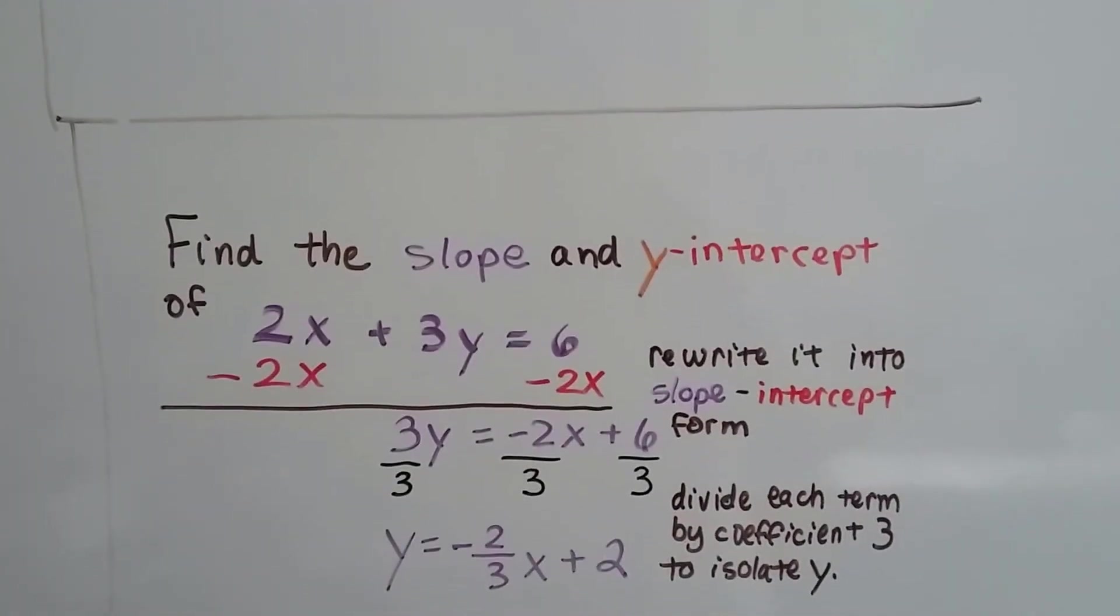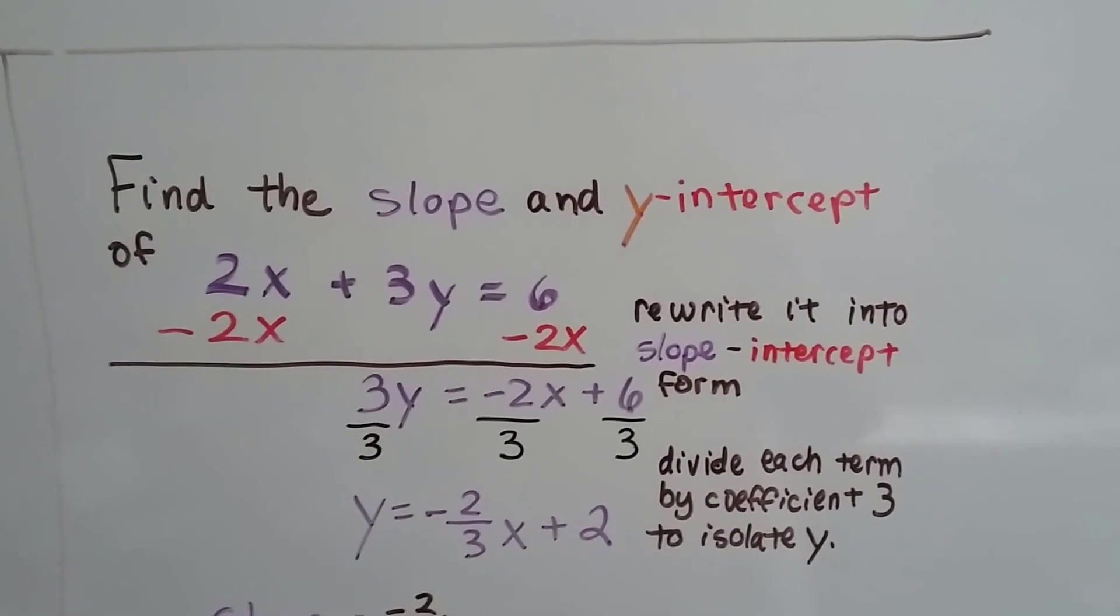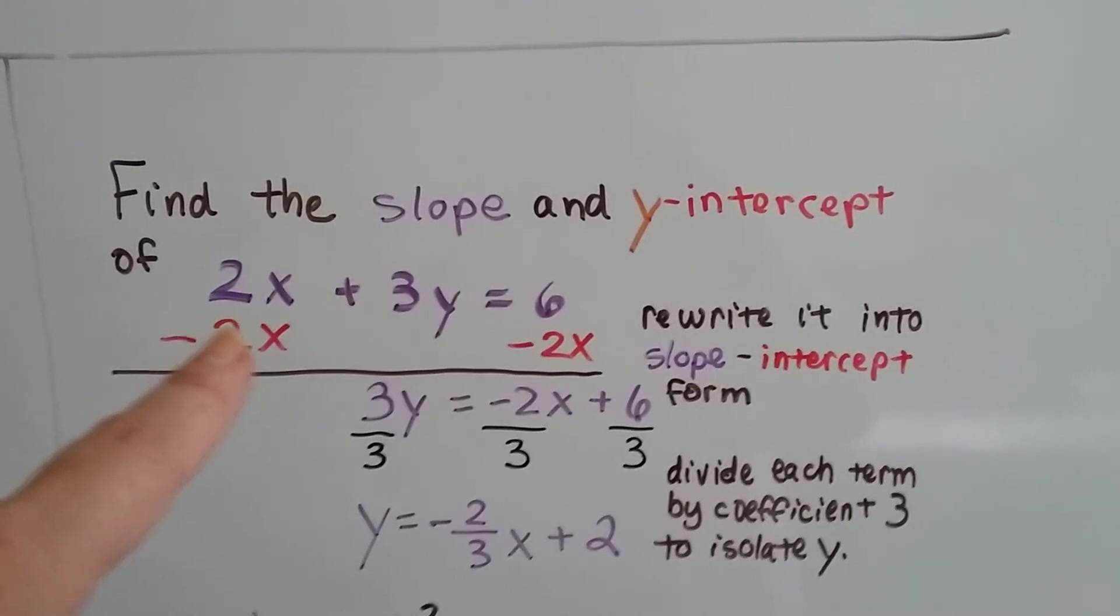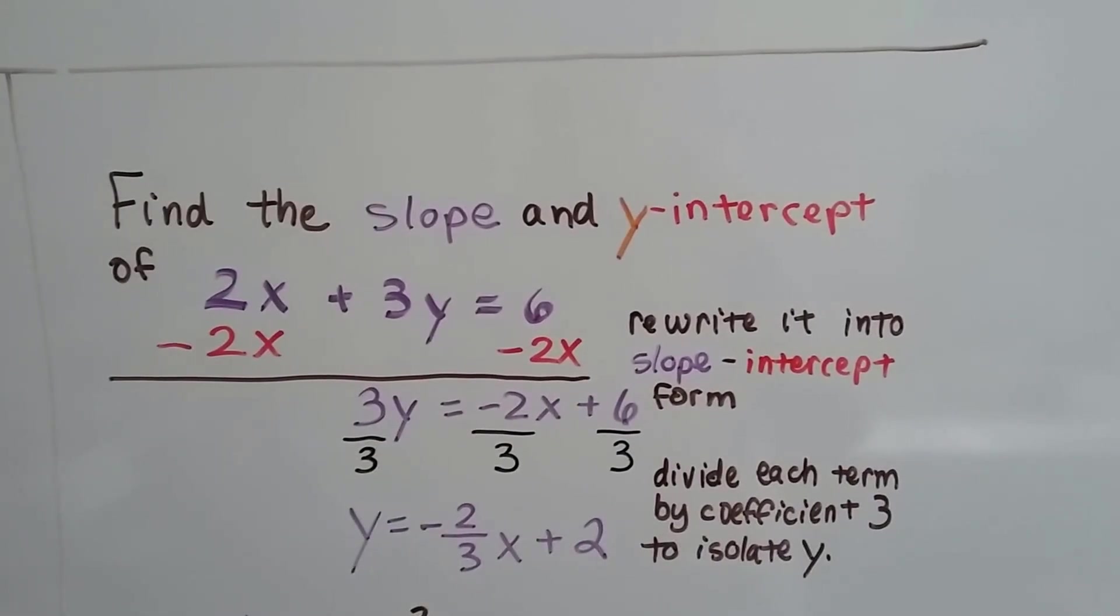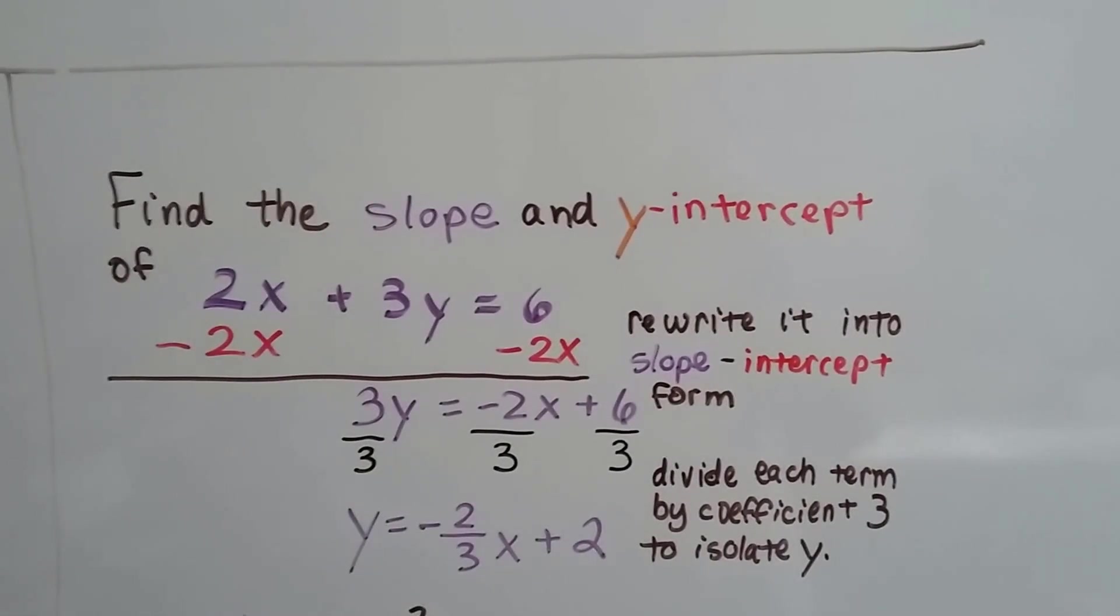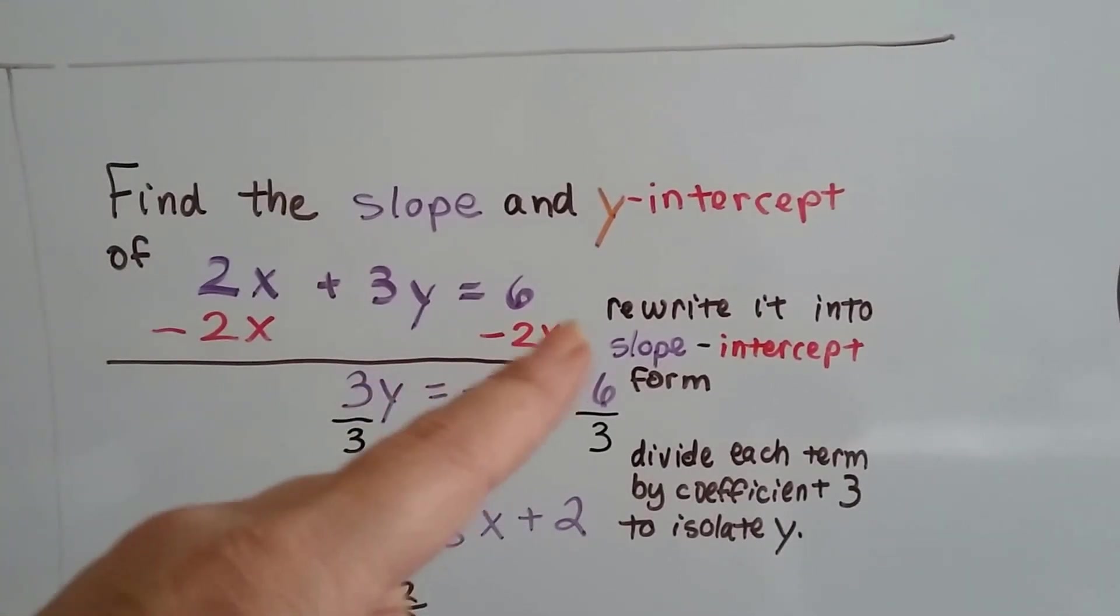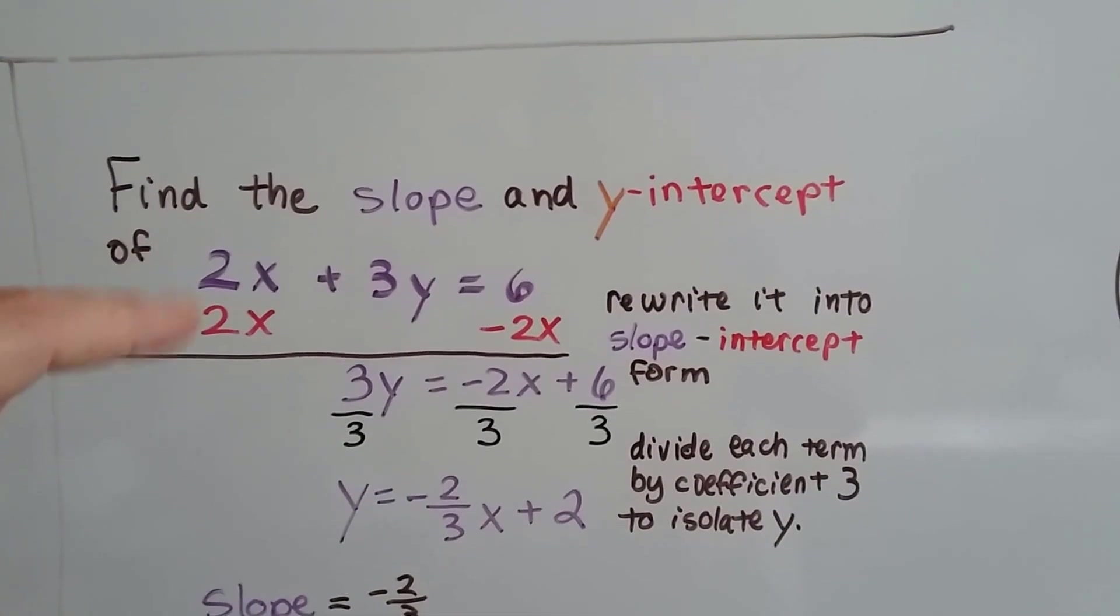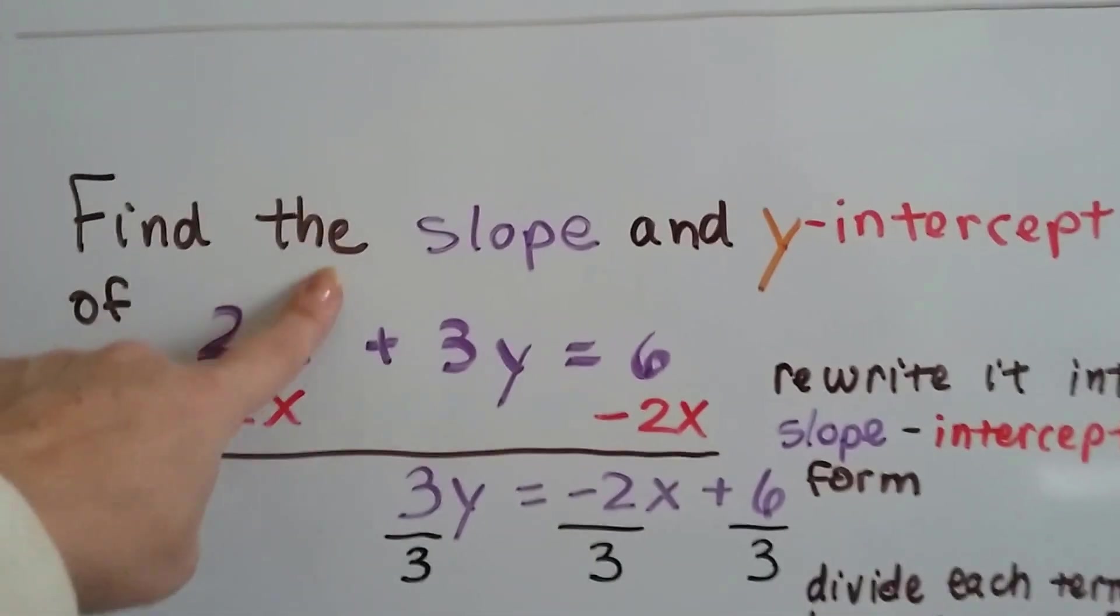But what happens when we're given a problem like this and it says, find the slope and y-intercept, and it's not in slope-intercept form. It says 2x plus 3y equals 6. That's not slope-intercept form. So what we need to do is rewrite it into slope-intercept form. What we do is we use our additive inverses and we take away 2x from each side. And then that'll eliminate this.